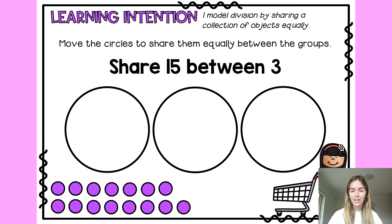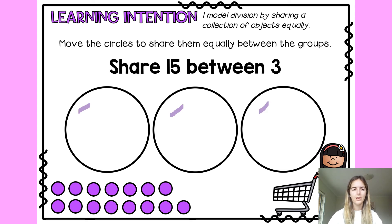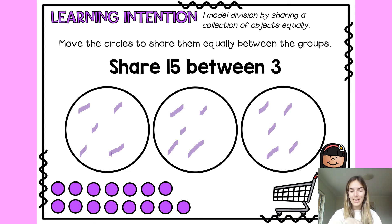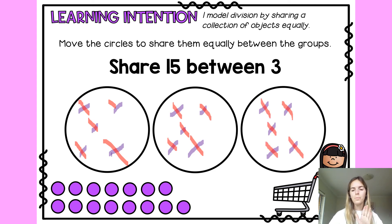Share 15 between three — pause the video, draw your three groups, share 15 between them and then come back. Counting with me: one, two, three, four, five, six, seven, eight, nine, ten, eleven, twelve, thirteen, fourteen, fifteen. How many in each group? One, two, three, four, five — five there; one, two, three, four, five; and one, two, three, four, five. So when we share 15 between three it equals five, because each group has five circles.